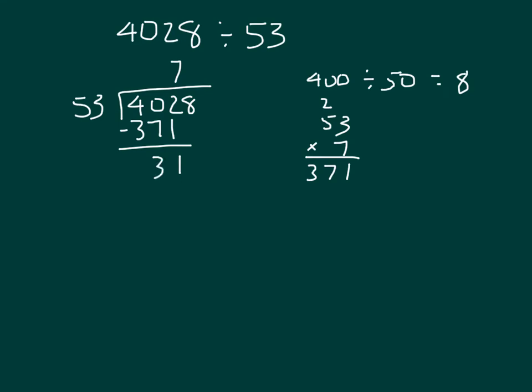2 minus 1 is 1, and then 40 minus 37 is 3. So I have 31 there, and that's 31 tens. There was not enough to make another unit of 53. I take those 31 tens, regroup it to the ones place to be able to divide, and so that 31 tens is worth 310. That's why I can bring down the 8 for 318 ones, dividing that by 53.